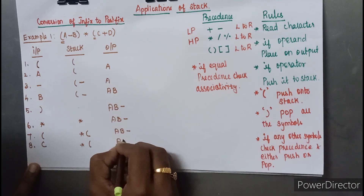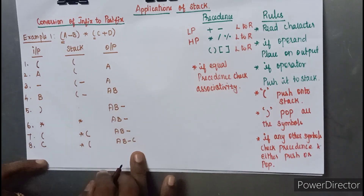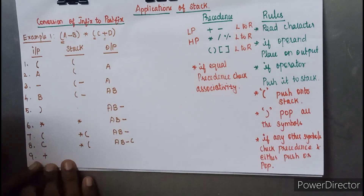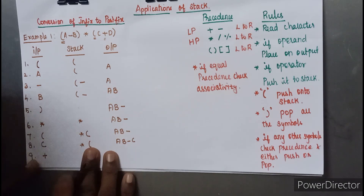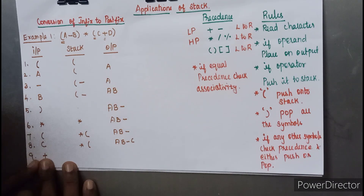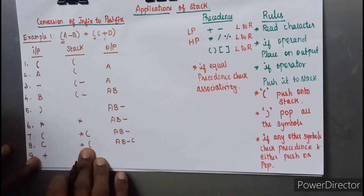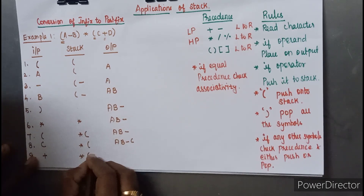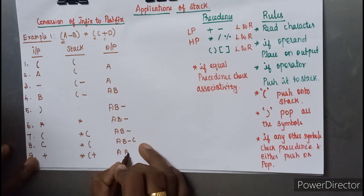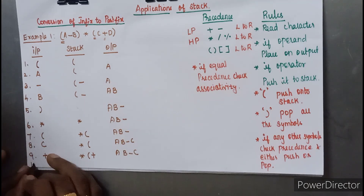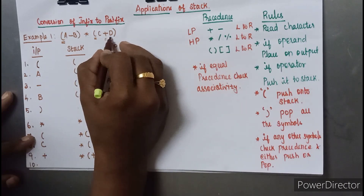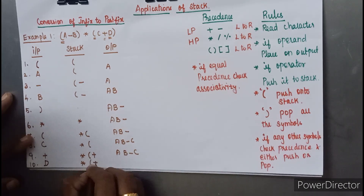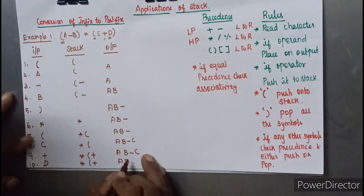The next character read is 'c', which is an operand, so the stack remains the same and the output string is updated. The next character read is plus. Since there is an open bracket in the stack, the plus has lower precedence relative to it, and since we should not pop anything until we reach the closing bracket, the plus is pushed onto the stack. The output remains the same. The next character scanned is 'd', which is an operand, so the output is updated.